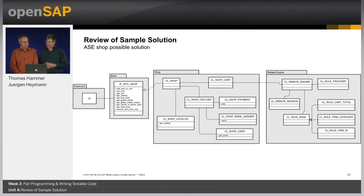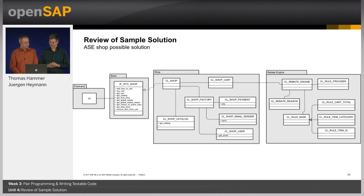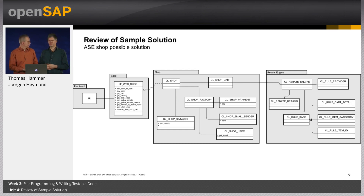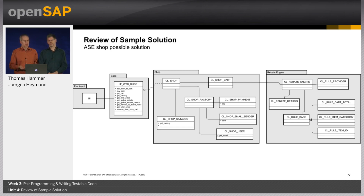Those are really the elements that matter. The rebate reason — you may have done this kind of collecting the reasons for the rebate so that the customer sees why they got it, like a promotion text that flows back and is shown in the UI. That's a small thing. You might also have separated, within rule item ID, giving a fixed amount back versus giving a percentage back — those could be two classes, and that's also correct. This is only a sample solution and your solution might look different but also be correct, so don't be surprised if it doesn't look exactly like yours.